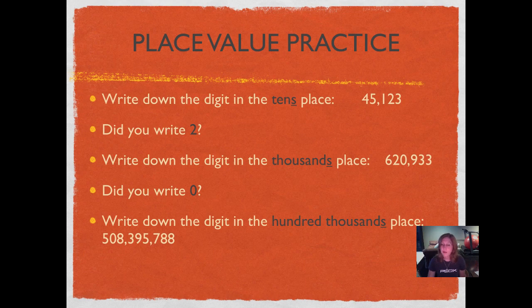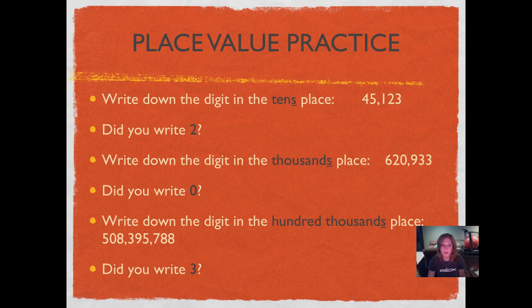Write down the digit in the hundred thousands place: 508,395,788. Did you write three? Let's sing the song to make sure: ones, tens, hundreds, thousands, ten thousands, hundred thousands. Yes, the three is in the hundred thousands place.